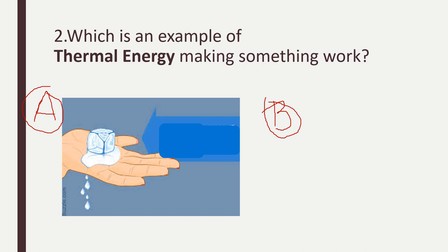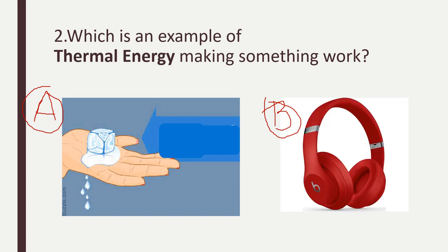Number two: which is an example of thermal energy making something work? Pause the video, choose A or B, and write down the reason why. I can see that A shows a solid ice cube that is melting. Is the heat making the ice cube melt? Yes. Letter B is an example of sound energy — sound energy will create that music. Therefore, my answer is A.